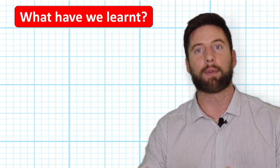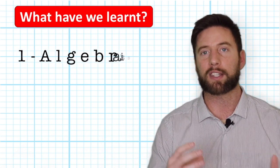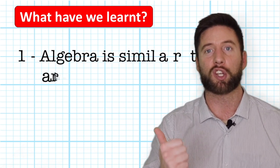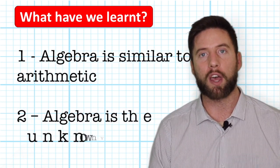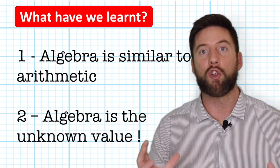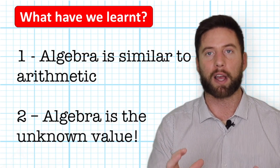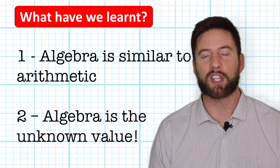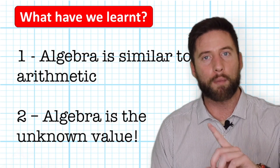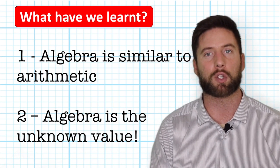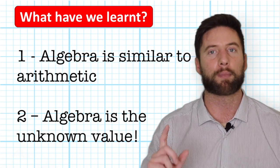So what have we learned so far? We've learned that algebra is very similar to arithmetic. It uses the same four processes: addition, subtraction, multiplication, and division. But we've also learned that algebra has an unknown value that can be replaced by a symbol. We often see X, Y, A, and B being used the most. But there is one more thing that's really important I want to teach you in this video, and it has to do with multiplication.